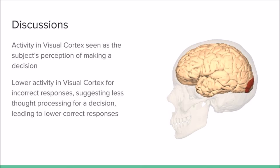In trials in which the subject gave an incorrect response, there was less activity in the visual cortex. This suggests that less decision-making activity was given to the dot stimuli, meaning that less activity in the visual cortex leads to a lower number of correct responses.